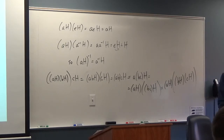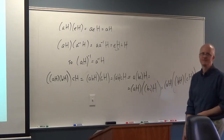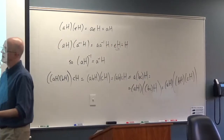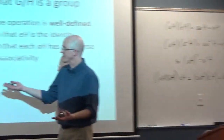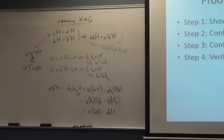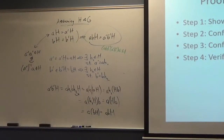Probably if I test you on this, the test would be on verifying it's well-defined. That's the most difficult but interesting part of the proof. It really tests whether you understand properties of cosets, and also what it means for H to be normal.